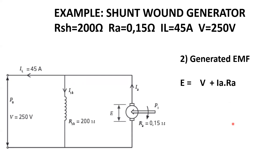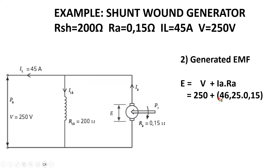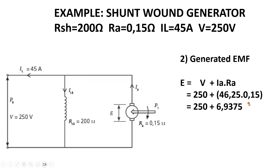To calculate the generated EMF for the shunt-wound generator — remember, generators are always positive — the generated EMF equals the terminal voltage plus the EMF generated across the armature assembly. That is 250 volts plus 46.25 multiplied by 0.15, giving a generated EMF of 256.938 volts.